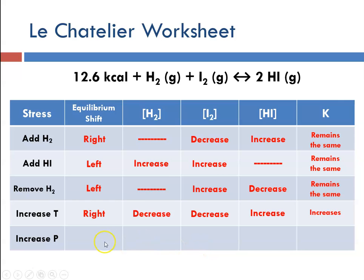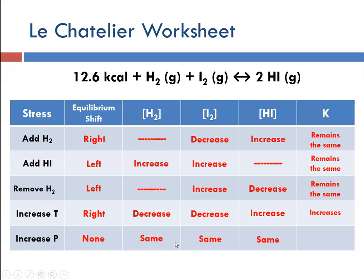If we change the pressure of this system, we have two moles of reactant and two moles of product — the number of moles of gas are the same on each side. That means a change in pressure will have no effect on the equilibrium; it will not shift it. The concentrations of reactants and products will not be changed, and the equilibrium constant will also remain the same.